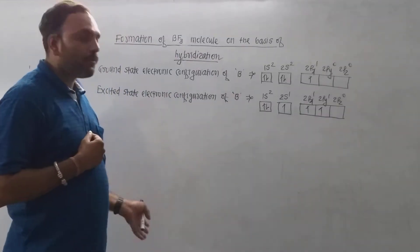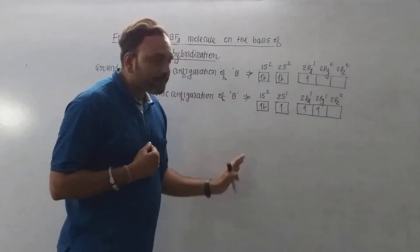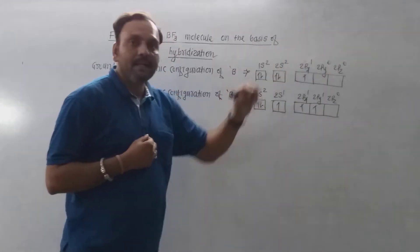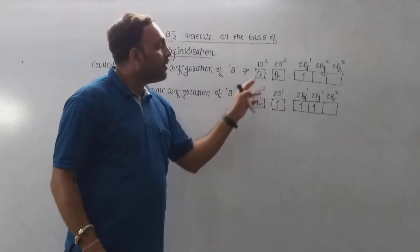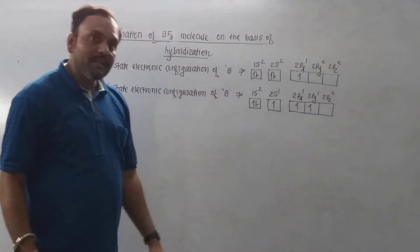Now, boron contains a vacant higher energy orbital in the valence shell and filled lower energy orbitals in the valence shell as well.